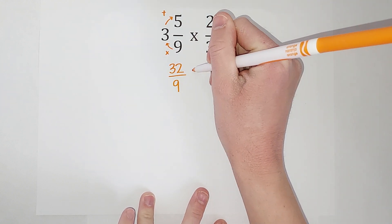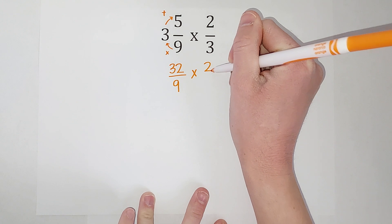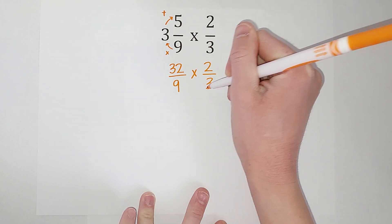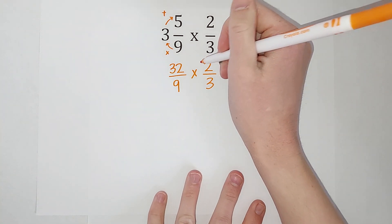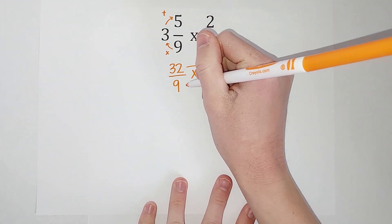And we are multiplying this by 2/3. Now the good news about when you multiply fractions is that our denominators don't need to be the same. It's very nice.